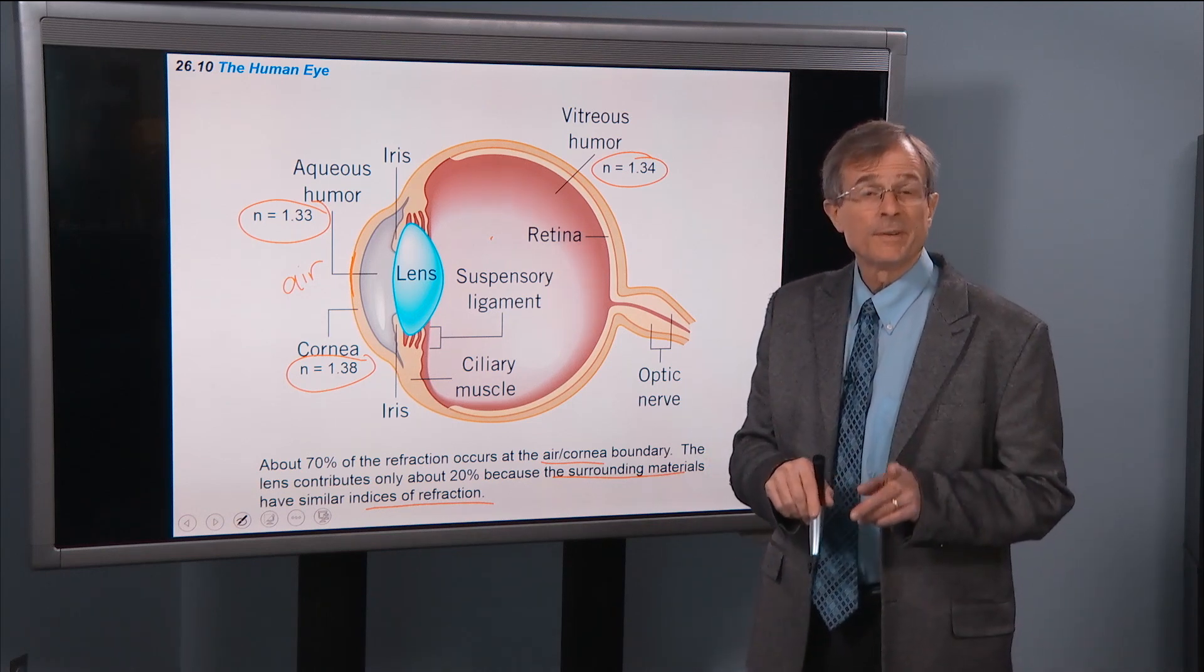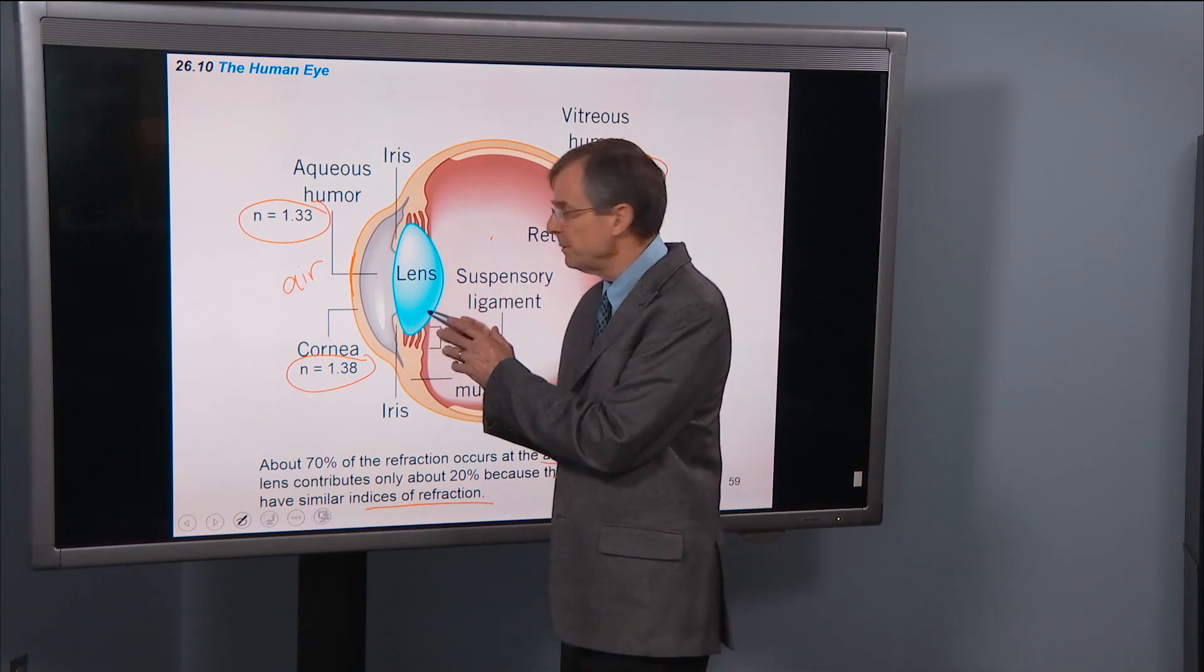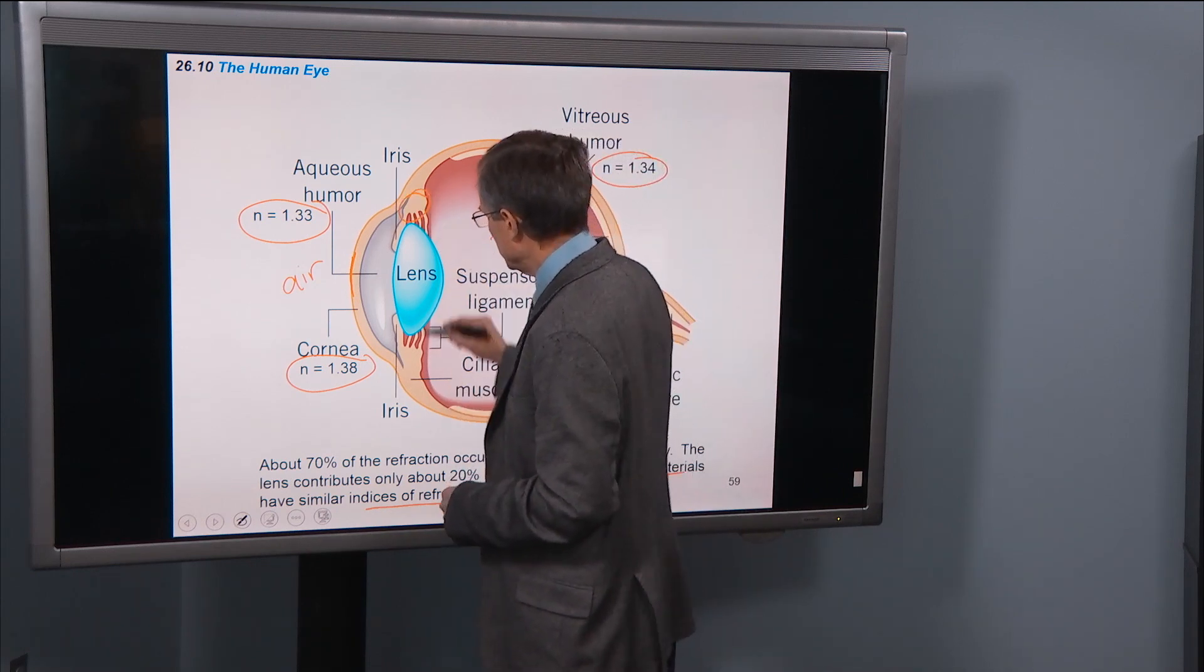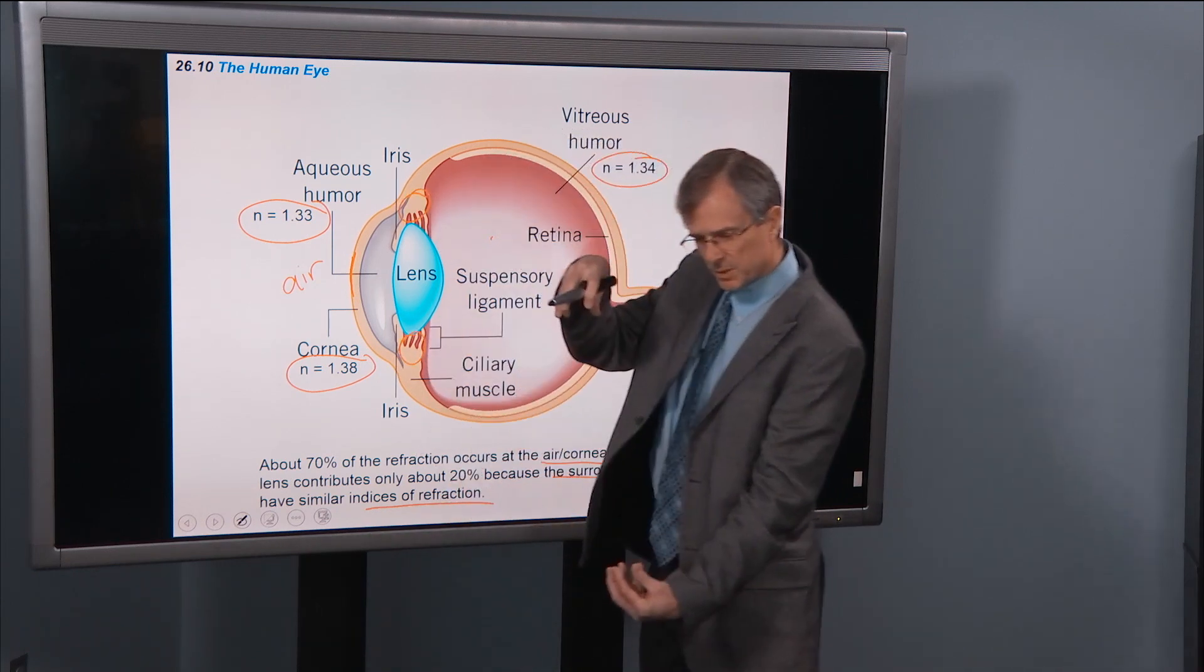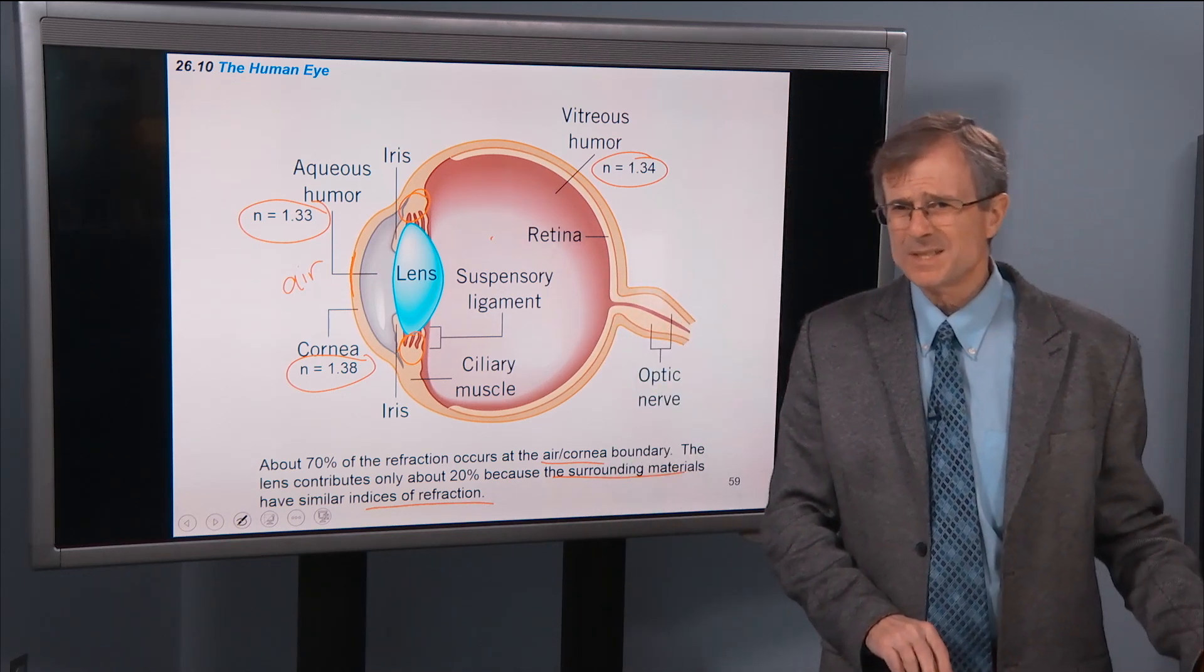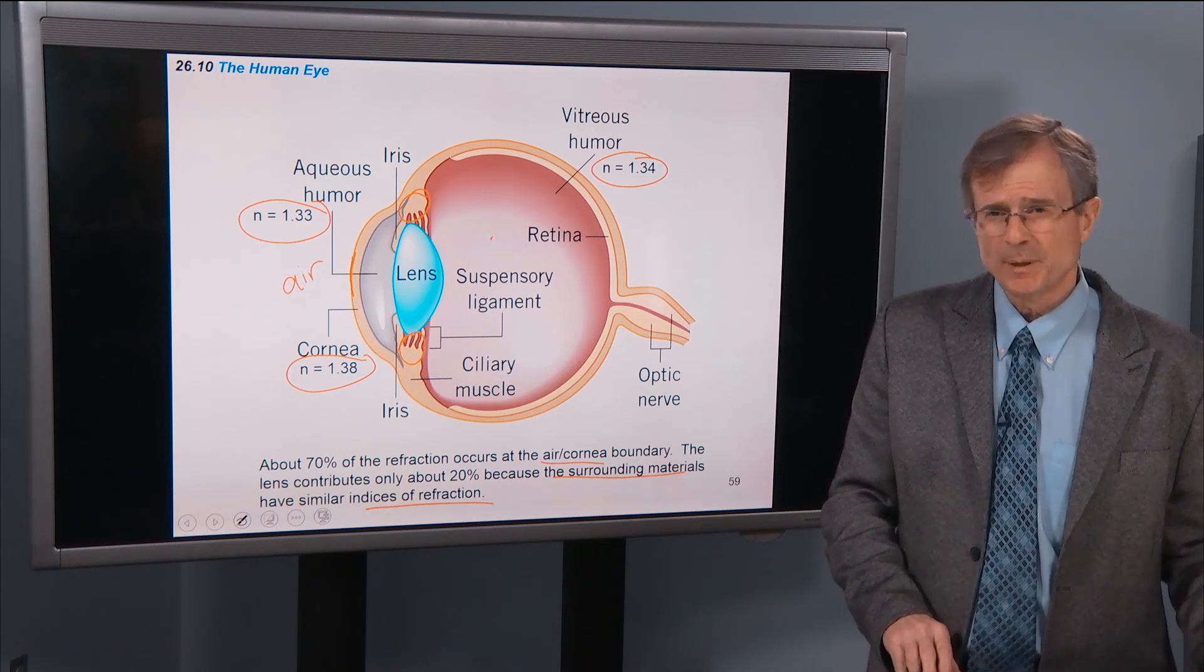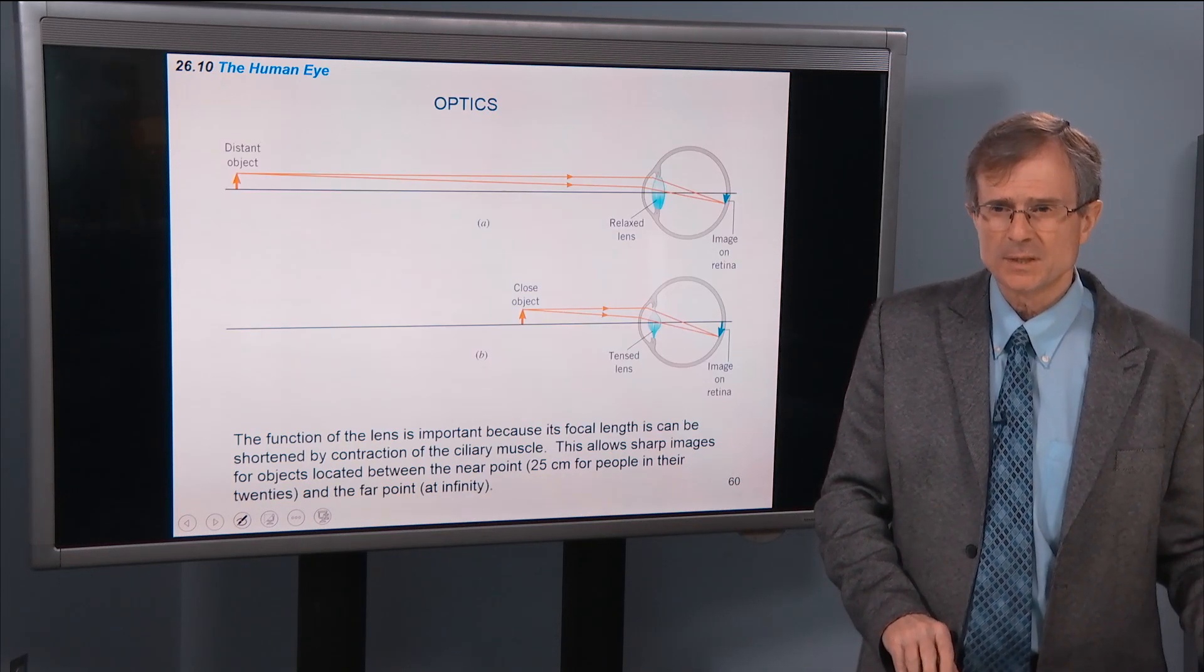But the lens forms a very important role, and that is that its shape can be manipulated by these muscles. So it can be elongated or with the ciliary muscles that change its shape and allow you to image things at different distances.